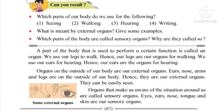What is meant by external organs? Give some examples. Organs that are on the outside of the body are external organs. Examples: eyes, ears, arms, and legs.